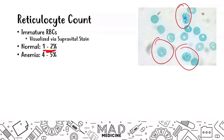You can also have an increased reticulocyte count with anemias. In anemias, you don't have enough red blood cells circulating, and your body is going to ramp up production. Because you are producing so much more when it comes to red blood cells, you are going to have more reticulocytes leaving the bone marrow than they should. That can lead to an increase in your reticulocyte counts — in anemia you're going to see a 4–5% increase, and it can be even higher than this.